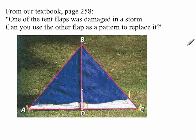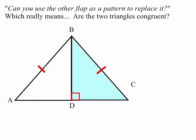I like this example in our textbook. It says if one of the tent flaps was damaged in a storm, can you use the other flap as a pattern to replace it? And you've got two right triangles here. So what they're really asking here is are the two triangles congruent?